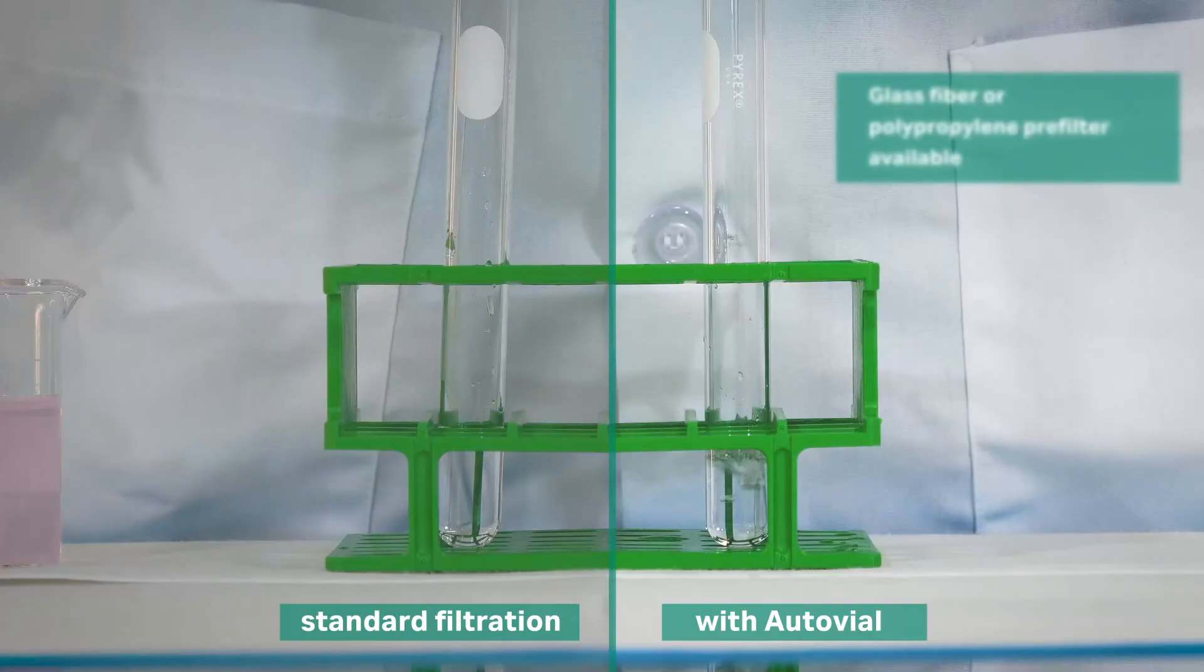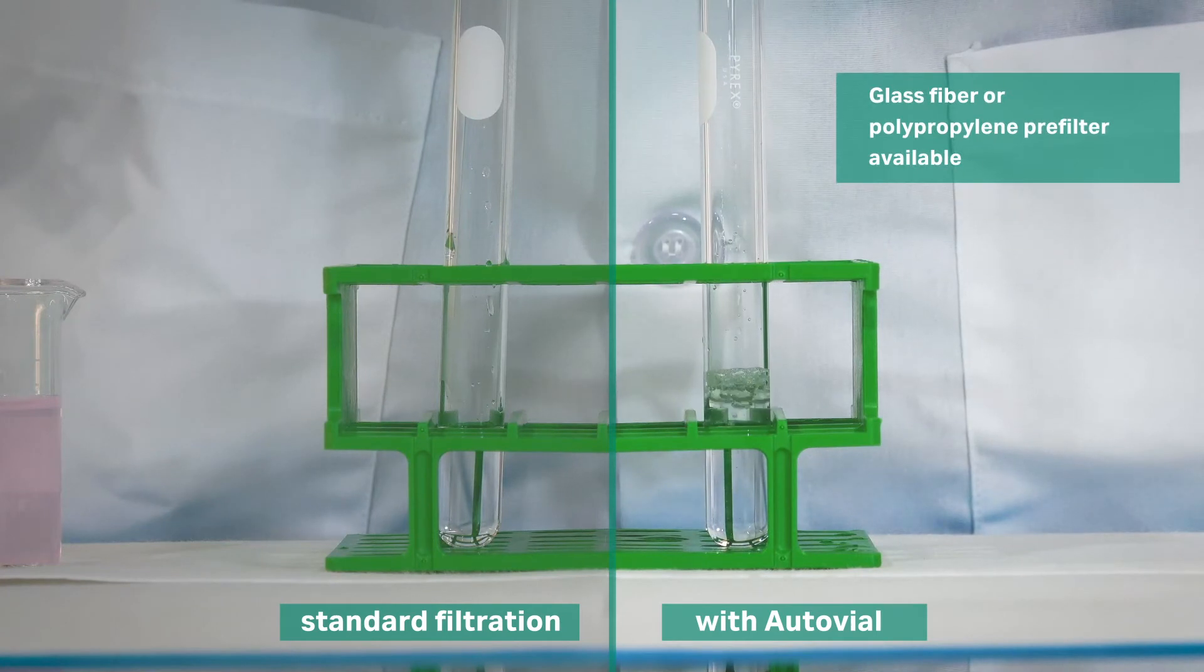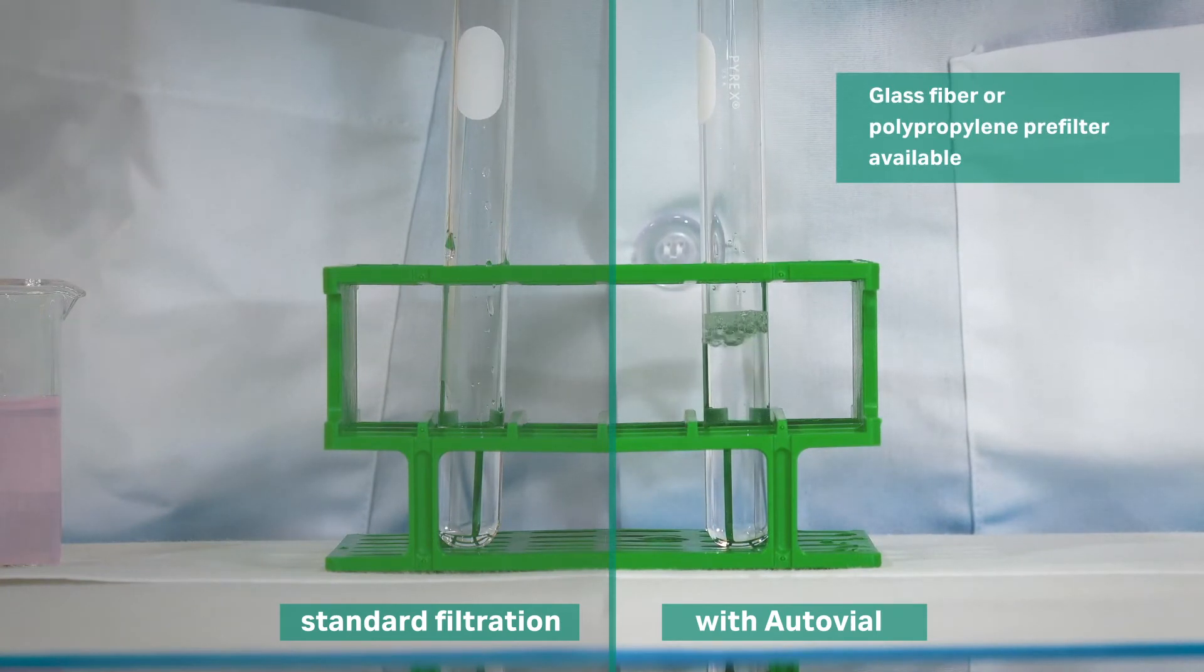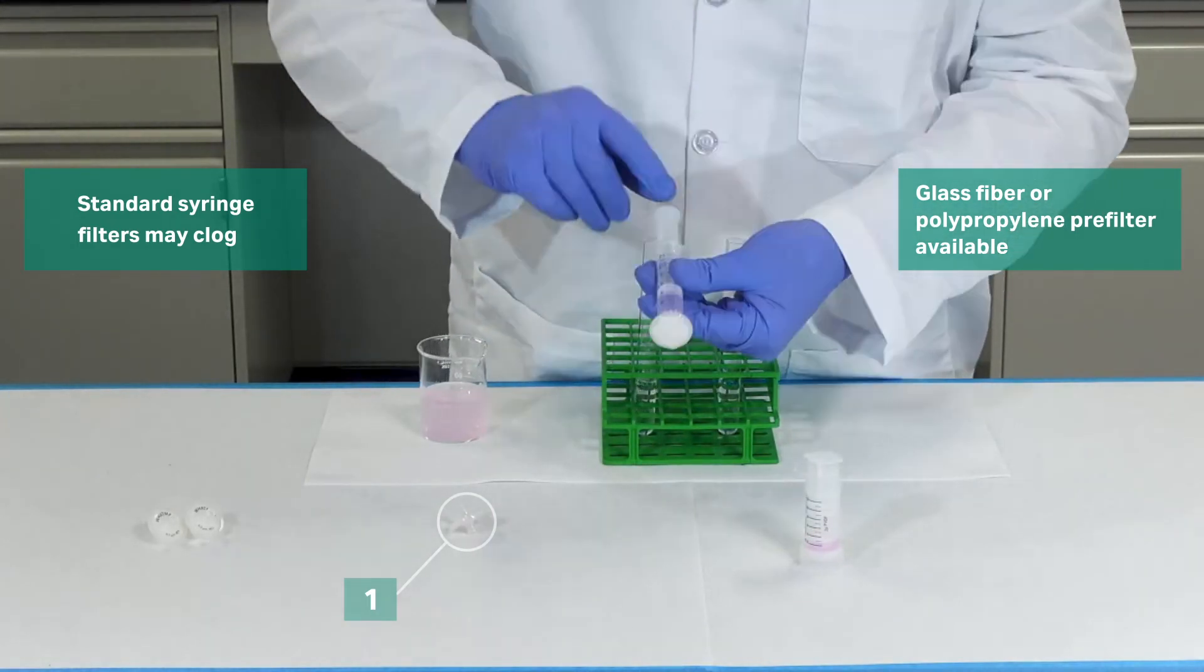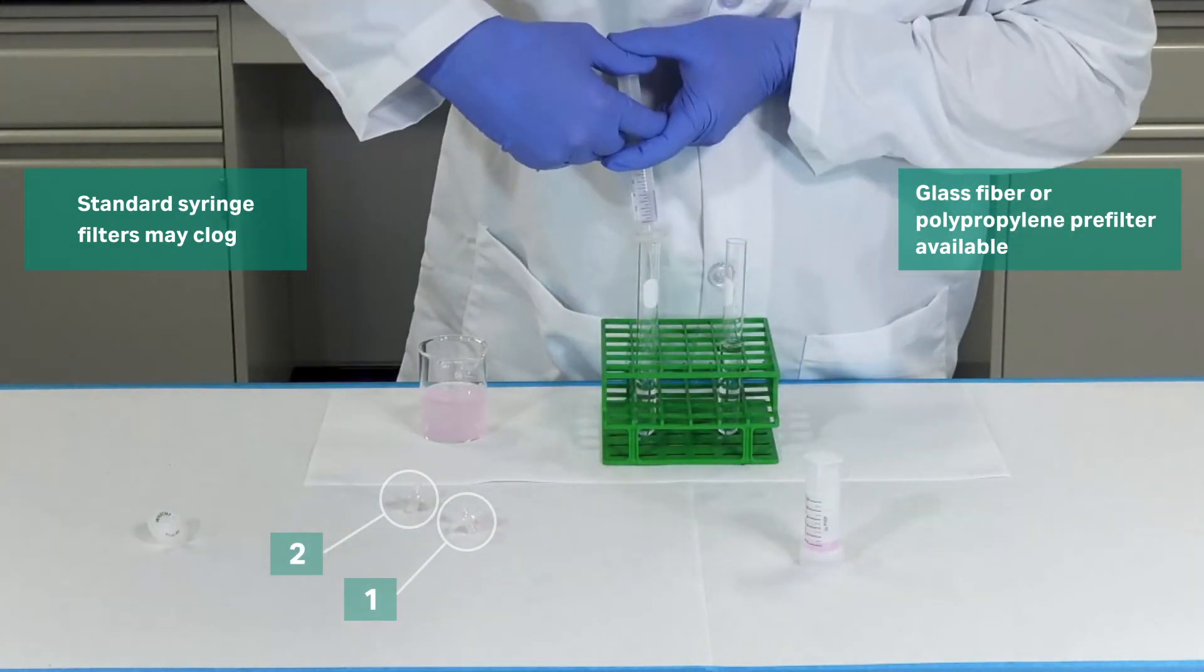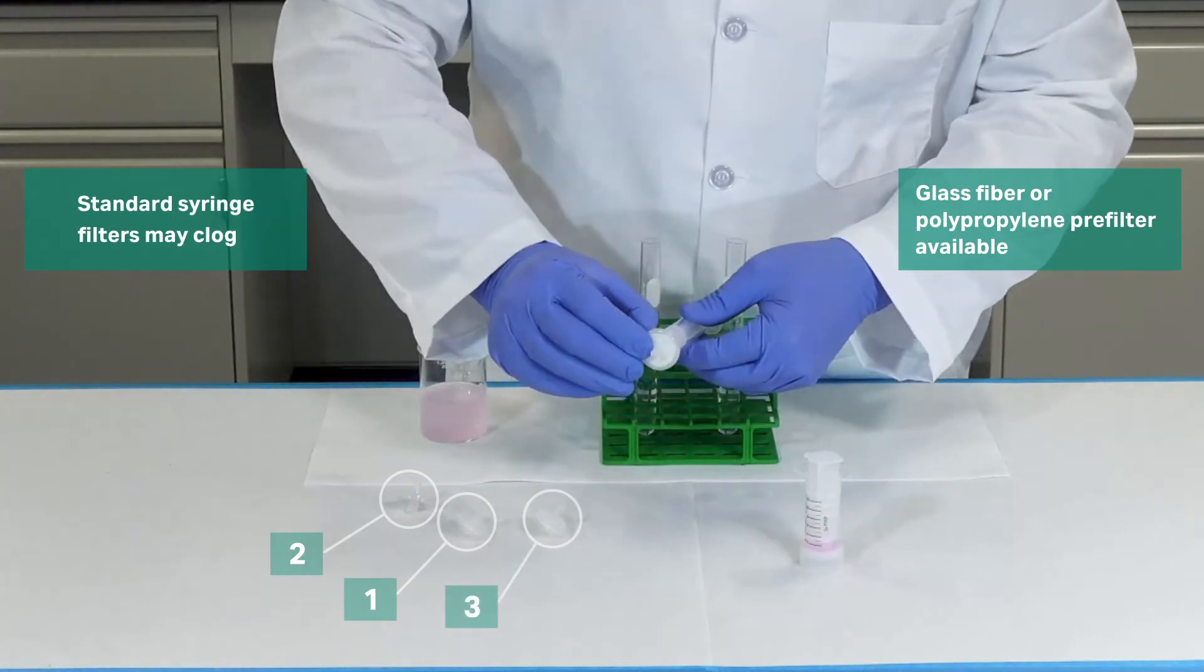This can be achieved using the built-in glass fiber or polypropylene pre-filter available in selected models. The sample shown here would have required at least four syringe filters using the conventional method due to clogging.